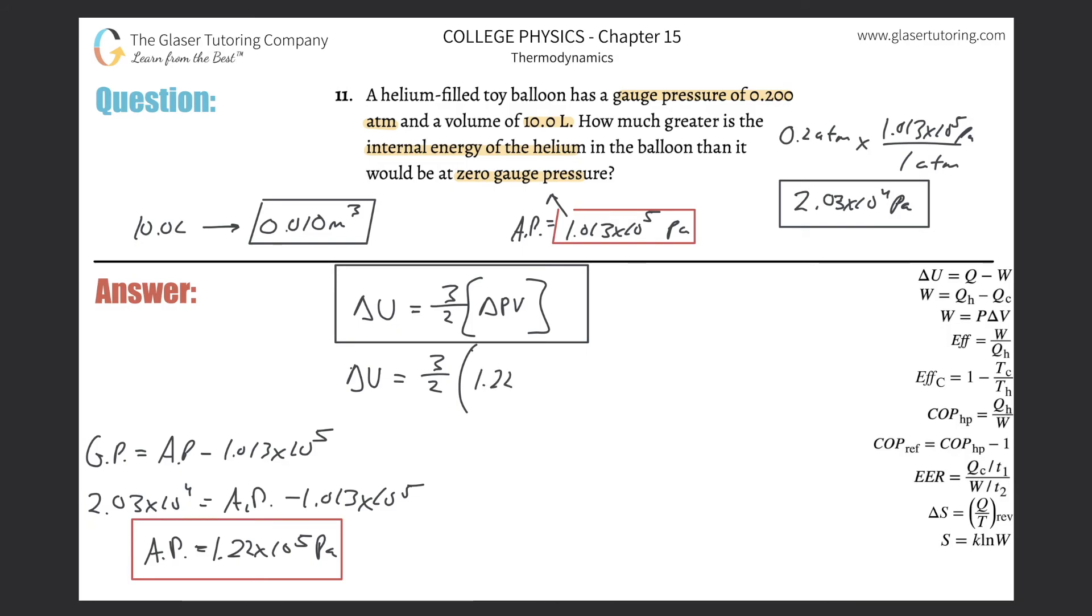All right, so this is 1.22 times 10 to the fifth minus 1.013 times 10 to the fifth, and that's then going to be multiplied by the volume, which in cubic meters was 0.01. And now the change in internal energy is just simply going to be this multiplication. So 3 divided by 2 multiplied by that difference in pressure, then multiplied by 0.01. And we get a value of about 304. So there's going to be 304 joules.